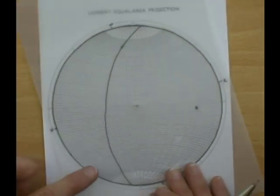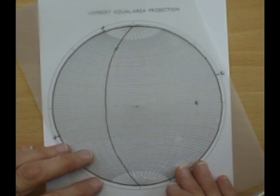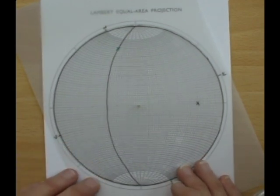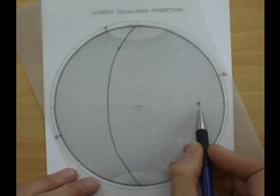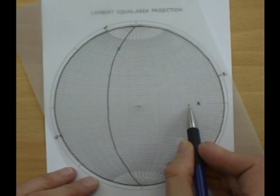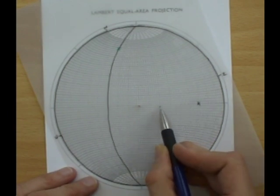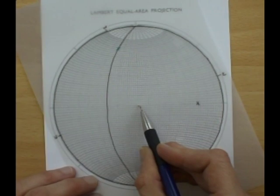So we take the pole to bedding round to the equator, and we want to restore it by moving it along to the center of the stereo net and counting how many degrees. So 60 degrees.